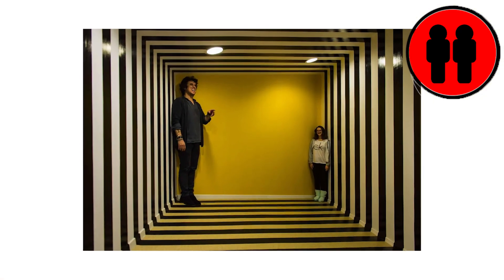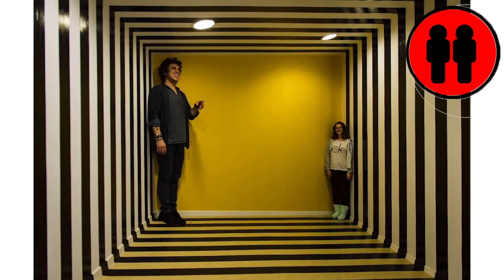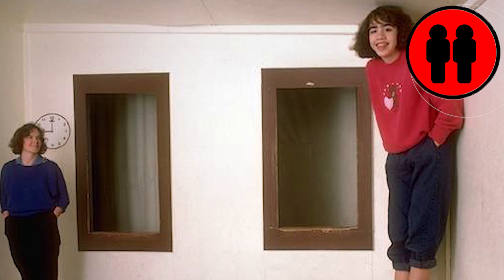The Ames Room has a specific geometry. It appears to be rectangular but is actually trapezoidal with one wall larger than the other. One corner of the room is closer to the viewer than the other.